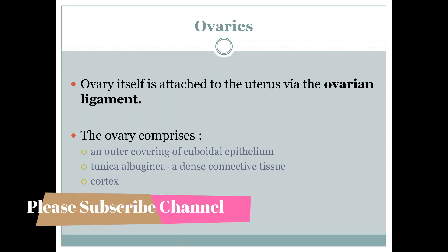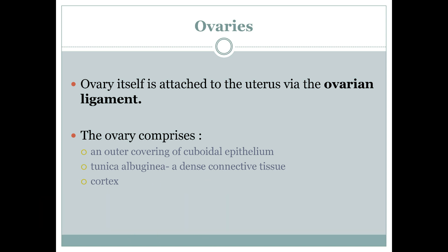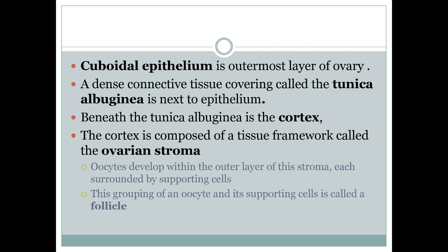Each ovary consists of an outer covering of cuboidal epithelium, a dense connective tissue layer called tunica albuginea, and the cortex. The ovary is attached to the uterus via the ovarian ligament. The cuboidal epithelium is the outermost layer. Cuboidal is a subtype of epithelial tissue in which the cells are cube-like in shape.